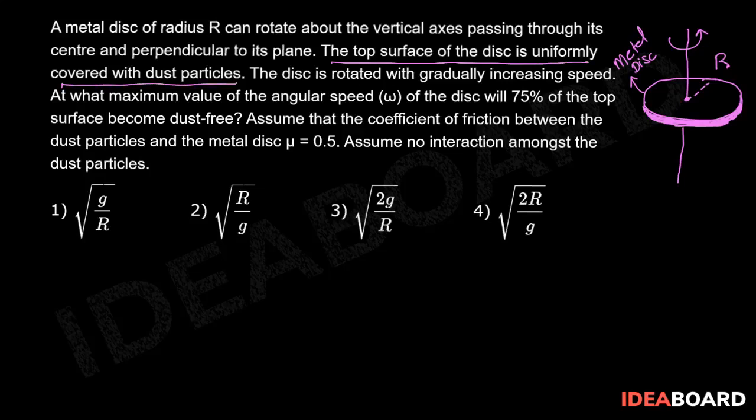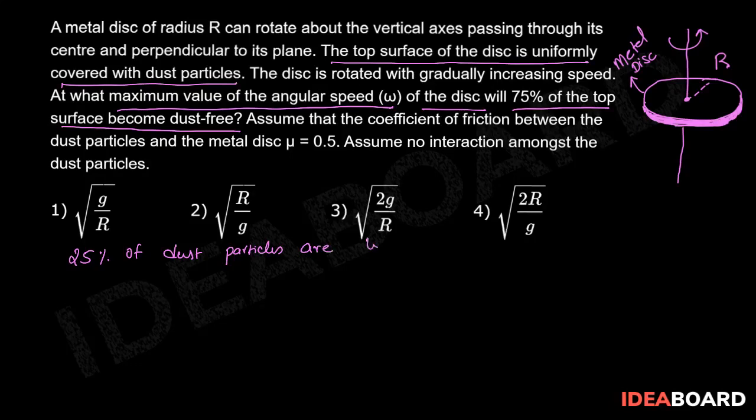Now we need to find the maximum value of angular speed of the disc for which 75% of the top surface of the disc becomes dust-free. If 75% of dust flies away from the surface of the disc, it means 25% of dust particles are lying on the disc.